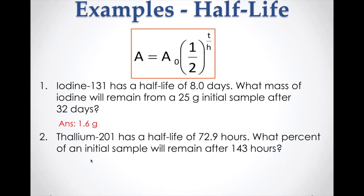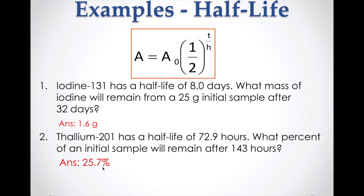Another example: thallium-201 has a half-life of 72.9 hours. What percent of an initial sample will remain after 143 hours? Since we're working with percent, we start with 100. So A = 100 × (1/2)^(143/72.9). Working through the calculator gives 25.7 percent.